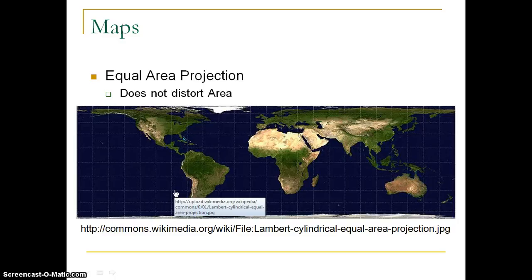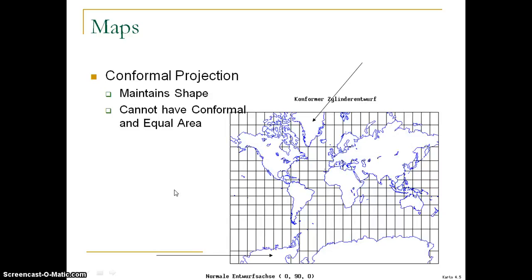The next one is called a conformal projection. This one maybe looks a little bit more familiar to you, especially if those of you are familiar with the Mercator projection map, which is what a conformal is. Mercator is a conformal projection. It maintains the shape of the land masses. Of course with the conformal it's impossible to have a conformal and also an equal area map at the same time because of the two different purposes. One is trying to maintain the land mass representation, and the other is trying to maintain the shape.